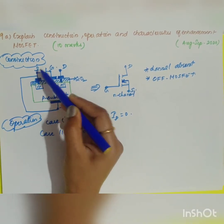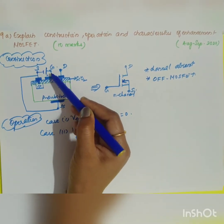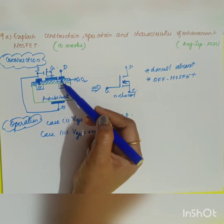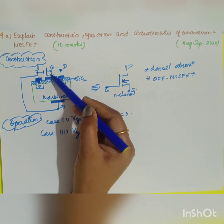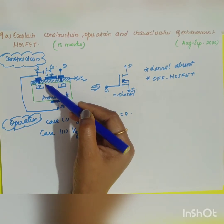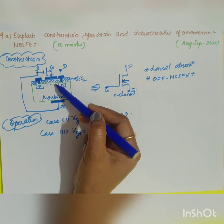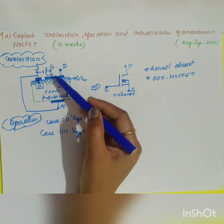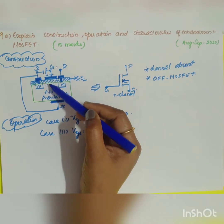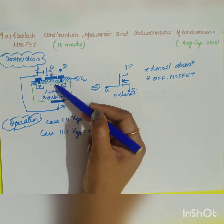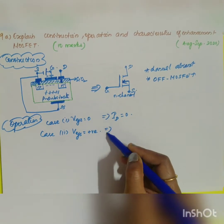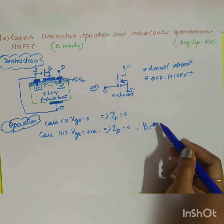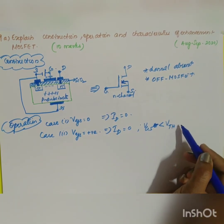In Case 2, when a positive VGS is applied, positive charge carriers accumulate across the gate. The silicon dioxide layer acts as a capacitor. On the opposite side, minority carriers accumulate across the SiO2 layer and majority carriers are pulled back toward the substrate. However, ID is still equal to zero because VGS is less than the threshold voltage VTH.